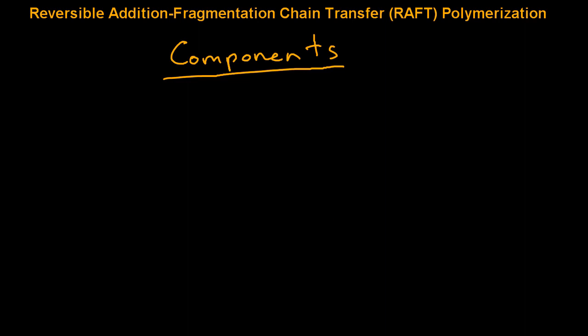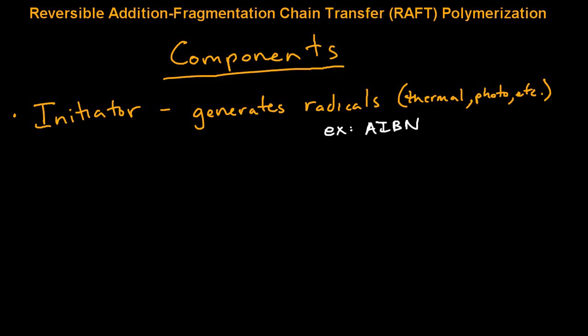What are the components necessary for a RAFT polymerization? The first one you'll need is an initiator. The initiator will introduce radicals within the species, and can be, depending on the conditions, any type—thermal or photo-initiator.